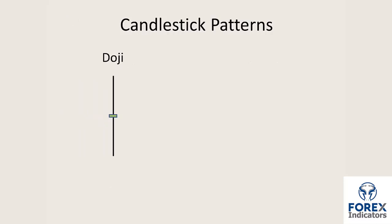The doji candlestick pattern basically has a very small body — the open and the close are very close together or they can be exactly the same level. The candle prints a high and a low, informing the candle, but then closes more or less where it opened. This suggests a point of indecision in the market — neither the bulls nor the bears have control.